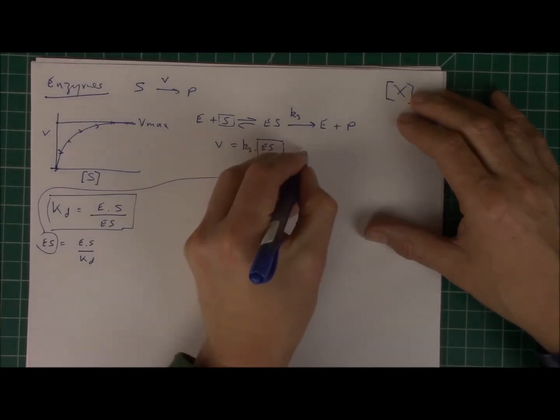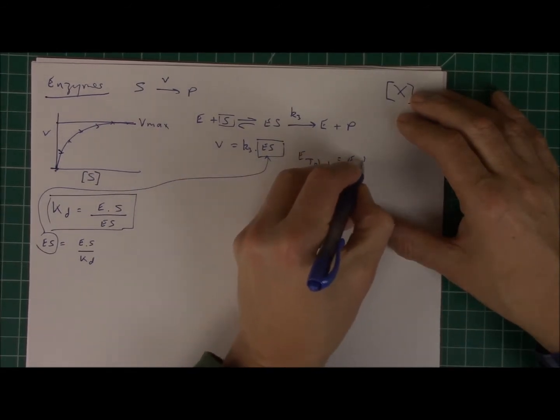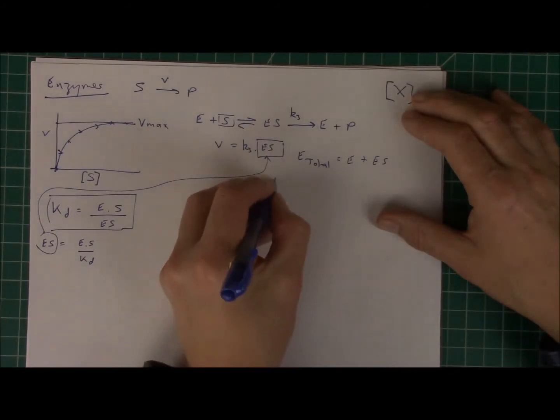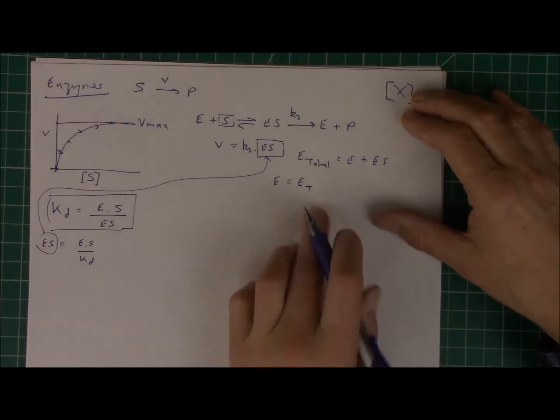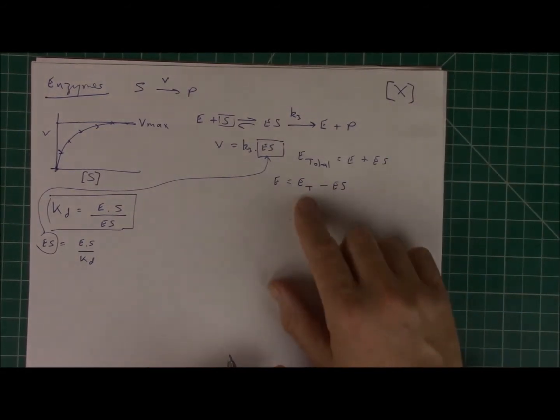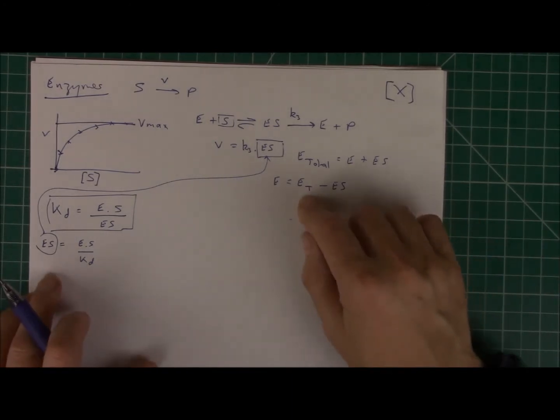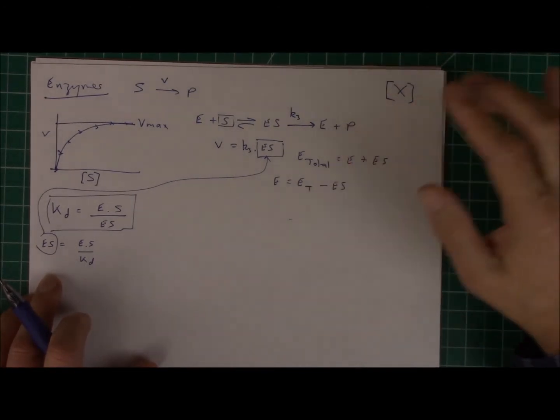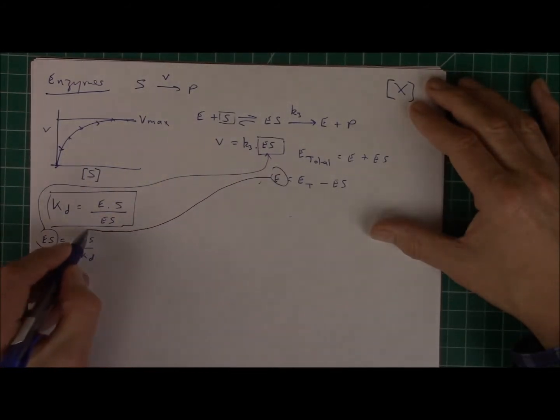I'm going to state that the total amount of enzyme equals the amount of free enzyme plus the amount of enzyme substrate complex. Now I can rearrange this to get free enzyme on its own. I'm going to simplify E total just to ET minus ES. So now I'm just saying that the amount of free enzyme is the amount of total enzyme minus ES. Now the amount of total enzyme I have, because that's the amount of enzyme I actually added to the mixture in my experiment. So I have that. So why don't I now insert this into here?